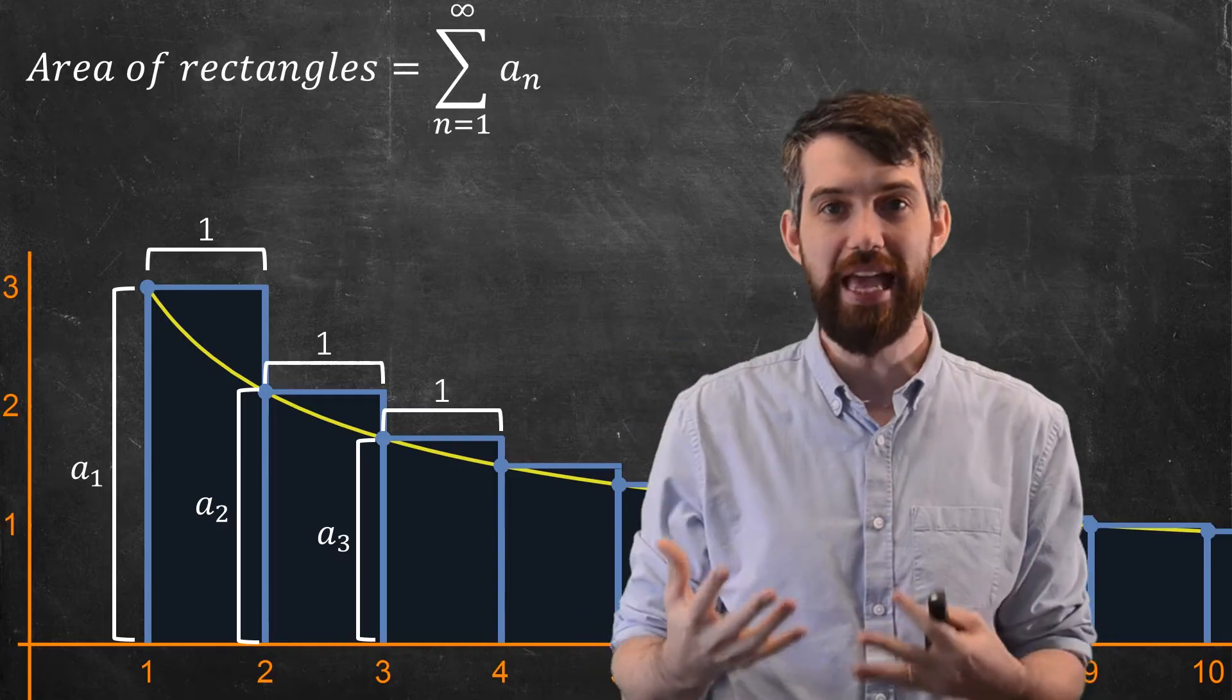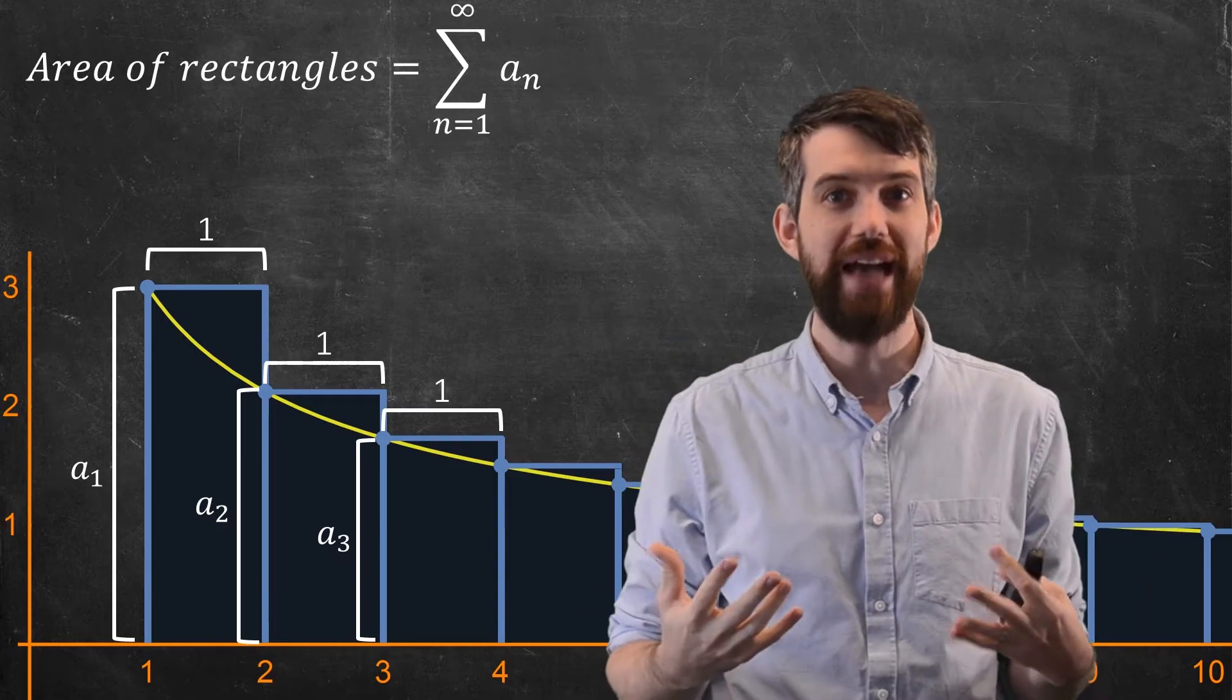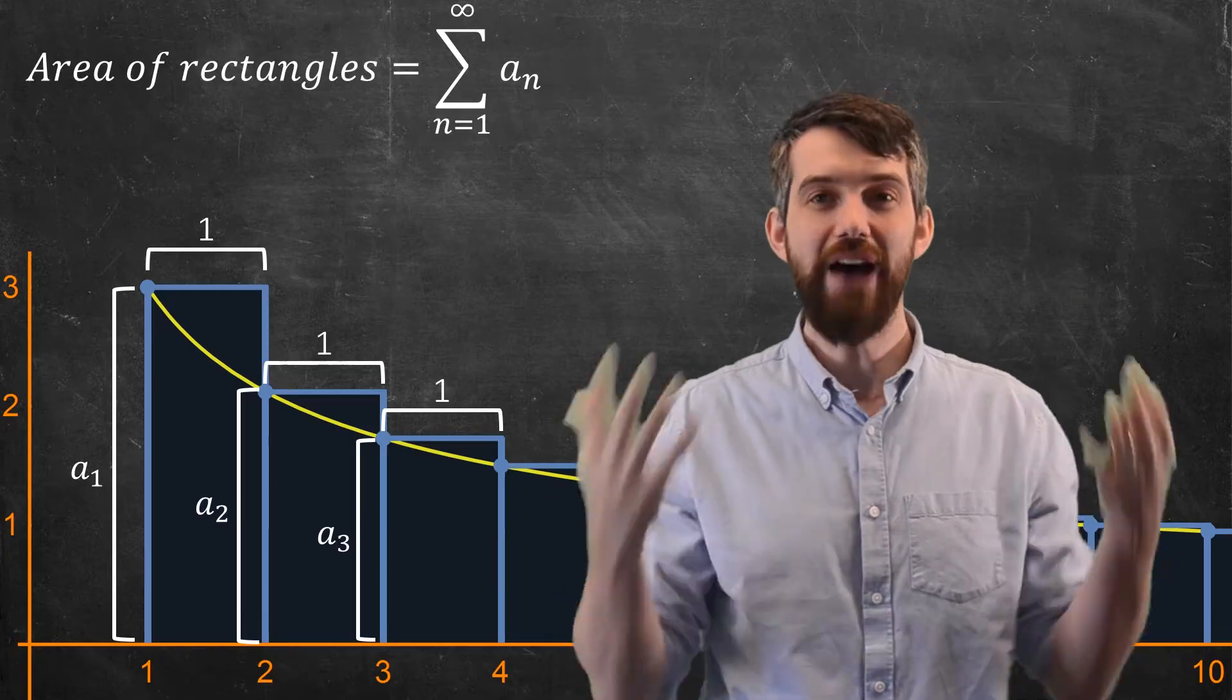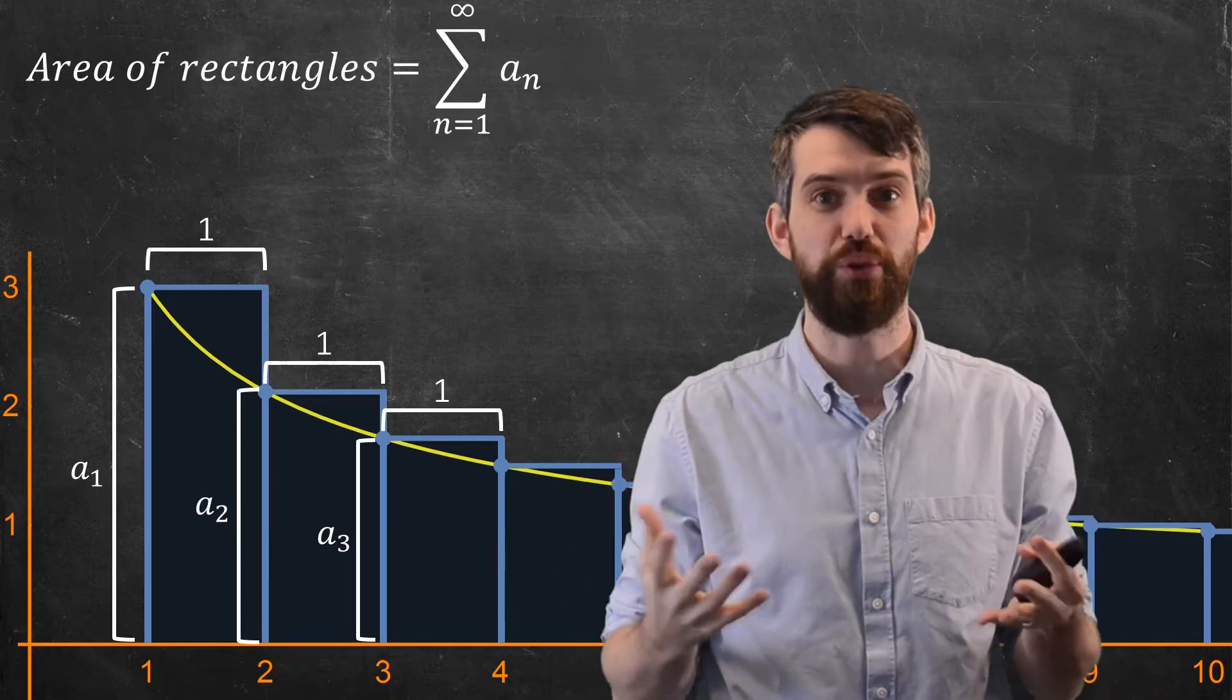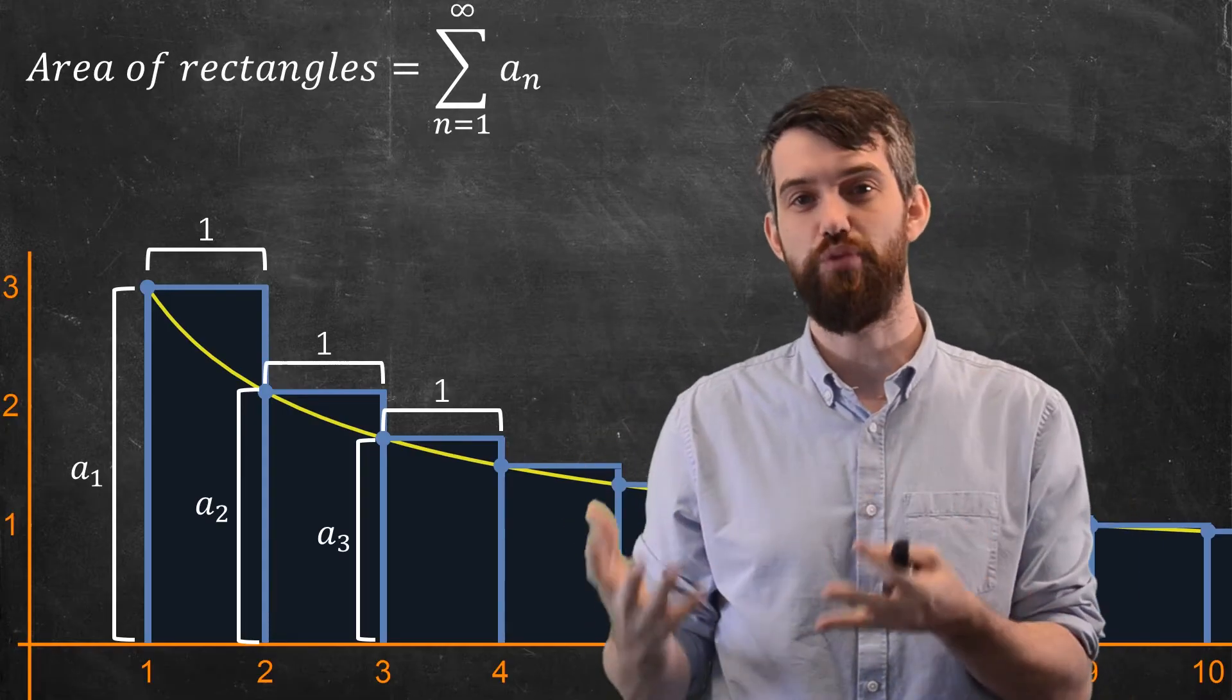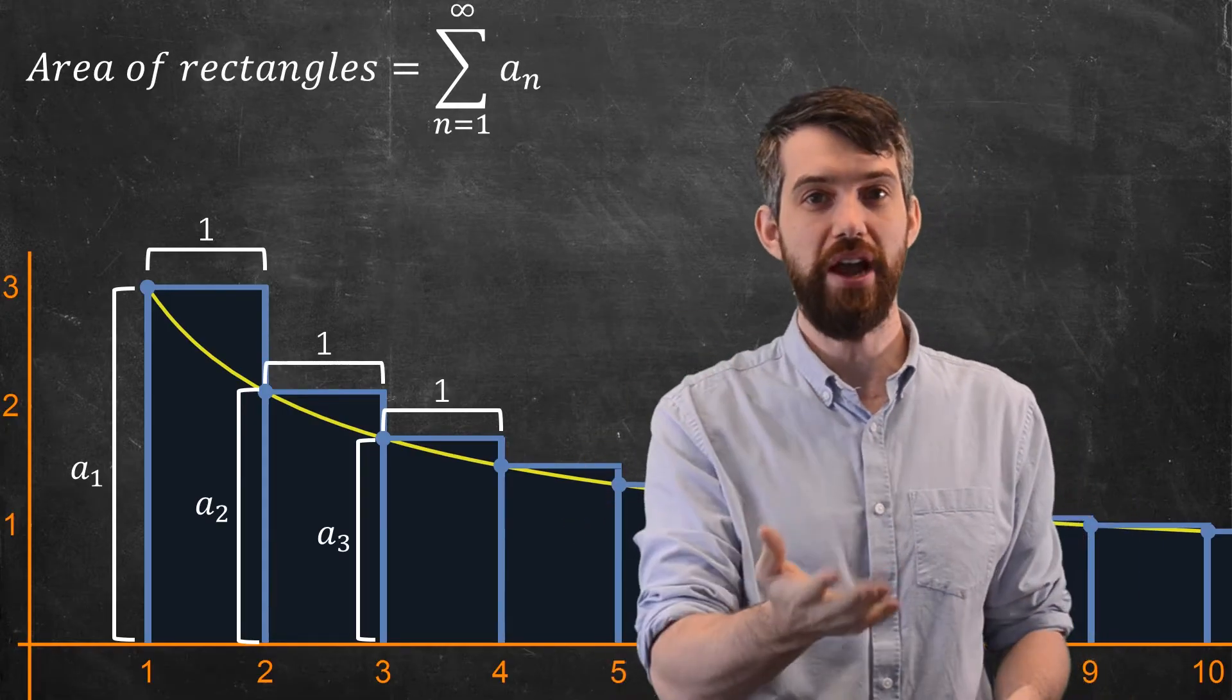So what I have is a geometric way of thinking about what a series is. The summation from 1 to infinity of aₙ can be thought of as the sum of these particular rectangles. And because I have this function of the continuous real variable x, the yellow curve underlying it, I can relate the sum of these rectangles to the area under that curve.